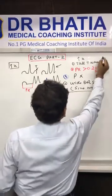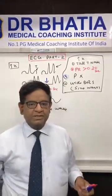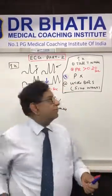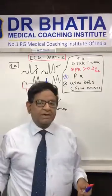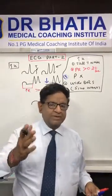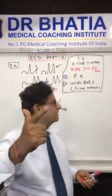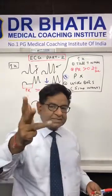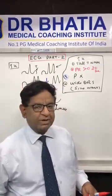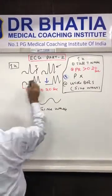So in hyperkalemia, the four keywords to remember are: tall T wave, prolonged PR interval, P wave disappears, and sine wave. Those are the four keywords you have to remember for hyperkalemia. Then we move on to hypokalemia.